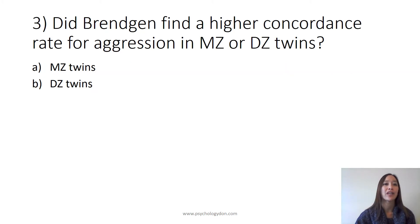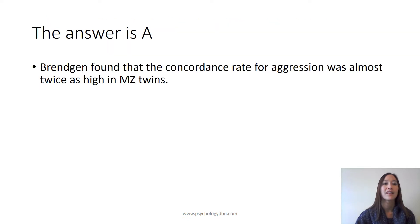Question 3: Did Brunjan find a high concordance rate for aggression in MZ or DZ twins? The answer is A. Brunjan found that the concordance rate for aggression was almost twice as high in MZ twins, who share 100% the same genes.